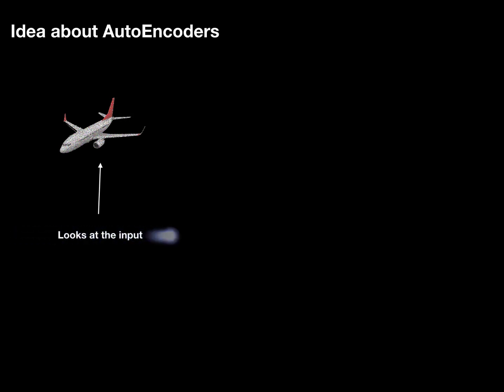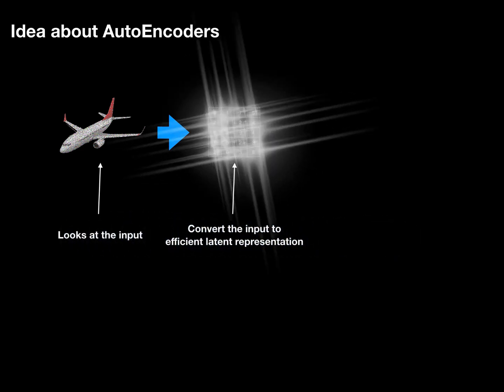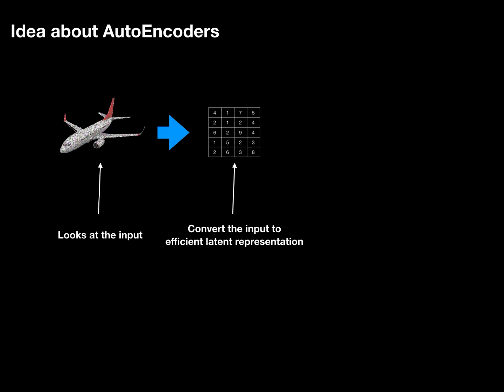So the model is looking to this input. What's next? We need to convert this noisy image of Boeing onto something readable for the model. A model understands numbers, so we need to somehow transform the input to efficient latent representation. In this example, it is a matrix of some numbers.